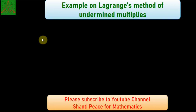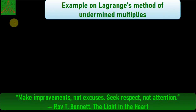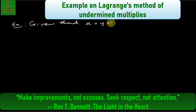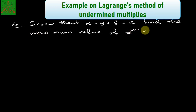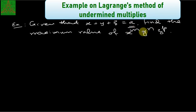Welcome to Shanti Peaceful Mathematics. In this video, we are discussing a problem on Lagrange multipliers. The problem is: given that x plus y plus z is equal to a, find the maximum value of the function x raised to m, y raised to n, z raised to p, where a, m, n, and p are parameters.